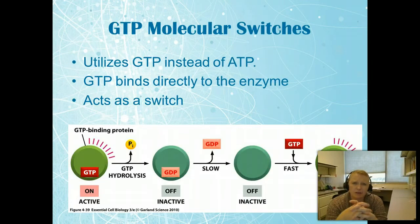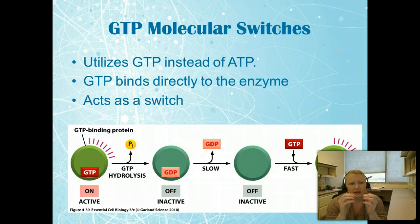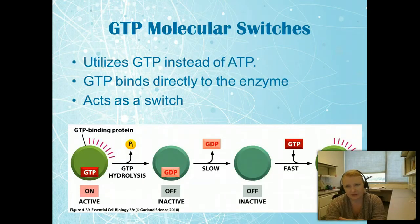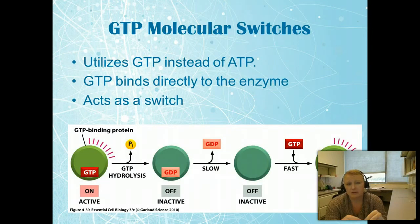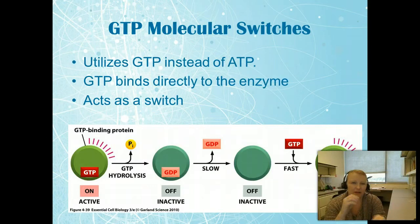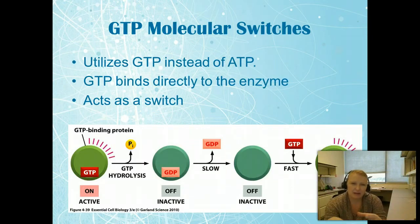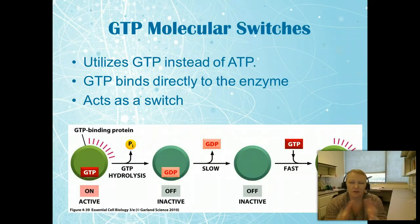GTP molecular switches are also very similar to phosphorylation, but instead of using ATP, we use GTP. GTP binds directly to the enzyme — here the kinase isn't transferring a group; the GTP itself is the switch. As you can see, when GTP is bound we have activity, as it slows down things decelerate, and once GTP comes off it's fully off. GTP is slightly different from ATP phosphorylation, but the idea is kind of similar.